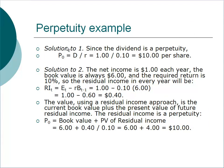Solution to part one: because the dividend is a perpetuity of one dollar, the formula is simply D divided by the cost of equity: $1 ÷ 10% = $10 per share. For part two, net income is $1 each year, book value is always $6, and the required return is 10%. Residual income = $1 − (0.10 × $6) = $1 − $0.60 = $0.40 per year.